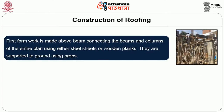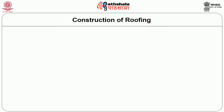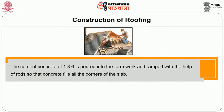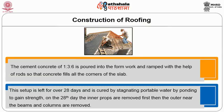Construction of roofing: first, formwork is made above the beam connecting the beams and columns of the entire plan using either steel sheets or wooden planks, supported to the ground using props. Then reinforcement of steel rods bound with steel wires running in both directions is placed above the formwork, with cover blocks kept between them to maintain the thickness of the slab. Cement concrete of 1:3:6 is poured into the formwork and rammed so that the concrete fills all corners of the slab. This setup is left for about 28 days and cured by stagnating potable water by ponding to gain strength. On the 28th day the inner props are removed first, then the outer ones near the beams and columns. Usually the thickness of the slab ranges from 100 to 125 mm.